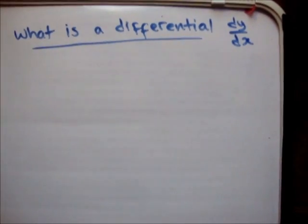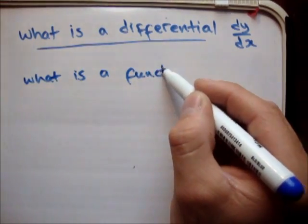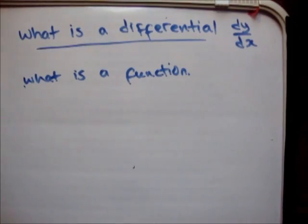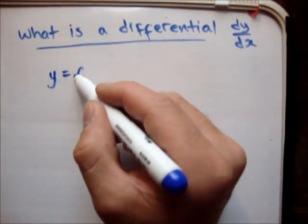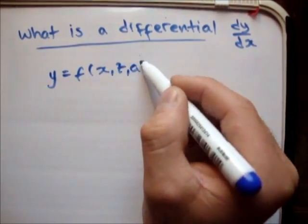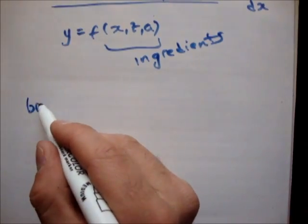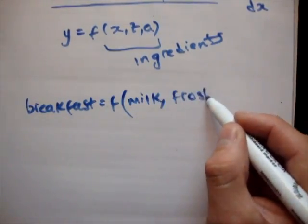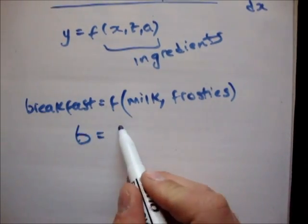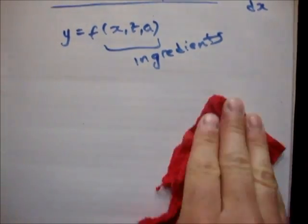In this video I'm going to talk about what is a differential and what does dy/dx actually mean. This video leads on from the video on what is a function, so have a look at that video if you haven't already. In that video we said we could have a function Y of X, Z, A — those were the ingredients to make Y. For example, we could have breakfast being a function of milk and Frosties, so B is a function of M and F.